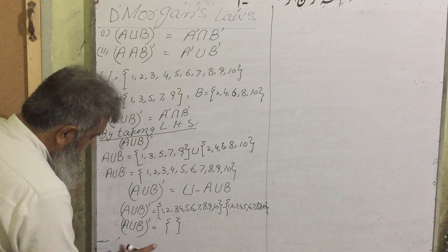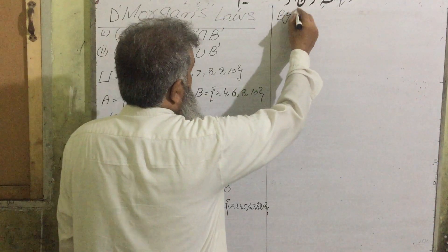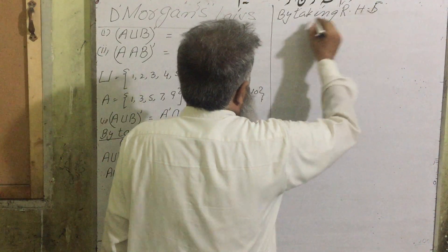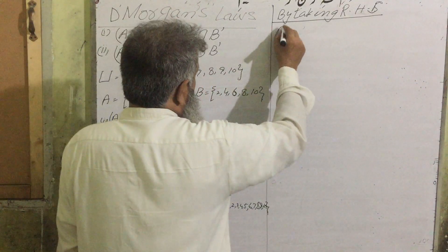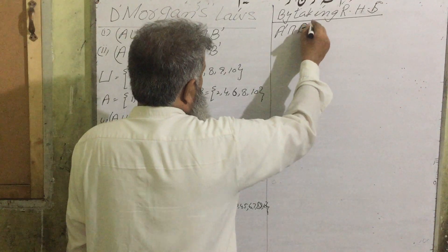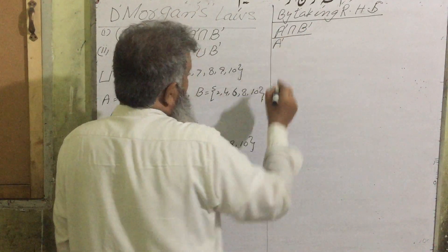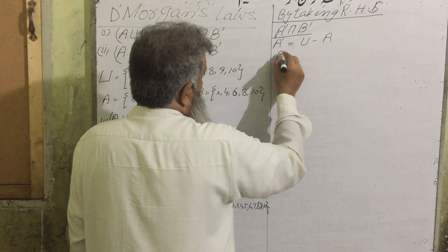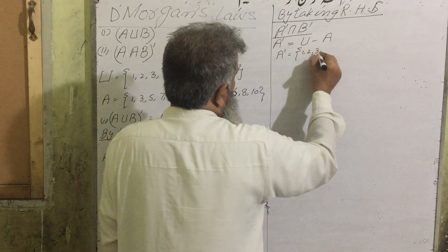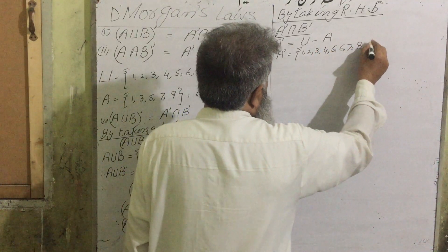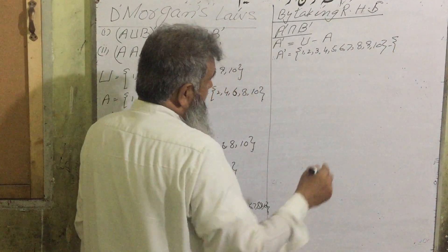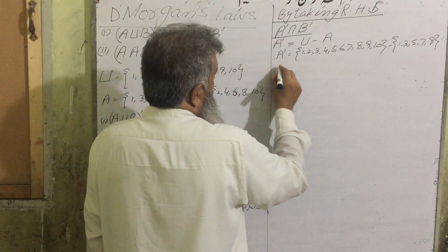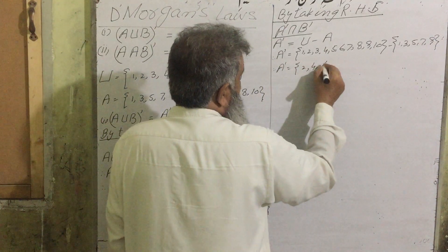Now, by taking the right hand side: A complement intersection B complement. First, let us find A complement. A complement = universal set minus A = {1,2,3,4,5,6,7,8,9,10} minus {1,3,5,7,9}. So A complement = {2,4,6,8,10}.